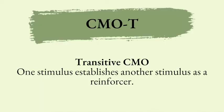The next CMO is the transitive CMO, or CMO-T. This is where one stimulus establishes another stimulus as a reinforcer — it transfers its effectiveness as a reinforcer. There is a great article published in 1987 using CMO-Ts to teach kids to mand for missing items. My publication, Pieles et al. 2021, used CMO-Ts to establish information as a reinforcer. When you're transferring that reinforcer effectiveness, that's where you're seeing the CMO-T.